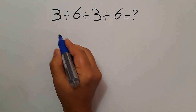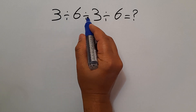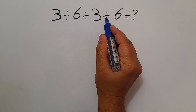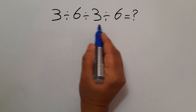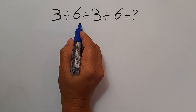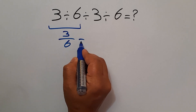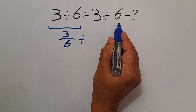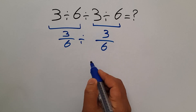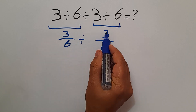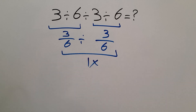Hi everyone and welcome to this video. In this video we want to find the value of the expression 3 divided by 6 divided by 3 divided by 6. Are you ready to solve? Let's go ahead and get started. 3 divided by 6 can be written as 3 over 6, and divided by 3 divided by 6 is also 3 over 6. So 3 over 6 divided by 3 over 6 gives us just 1 — but this answer is not correct.